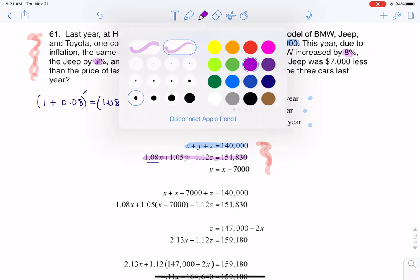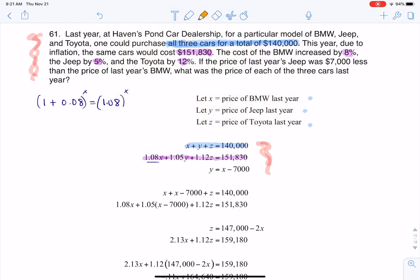So there's where the second equation is coming from. Let me switch colors again. It says the price of last year's Jeep was $7,000 less than the price of last year's BMW. The price of last year's Jeep was Y, and the price of last year's BMW was X. So I have this third equation: Y equals X minus $7,000.